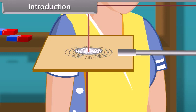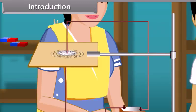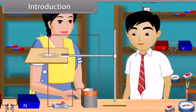You saw the iron dust particles arranged into the concentric circle pattern due to the magnetic field generated by the electric current. Today we'll study more about the moving charges and magnetism.